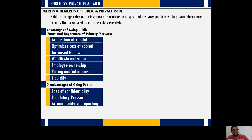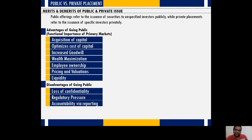Third, public companies are more accountable, and that accountability comes via reporting. Every year a public limited company holds statutory meetings like AGMs, where the chairman or CEO presents the company's performance and progress report. The annual report is shared with the public and all statutory bodies, covering both financial and non-financial information — which is a disadvantage in terms of accountability.